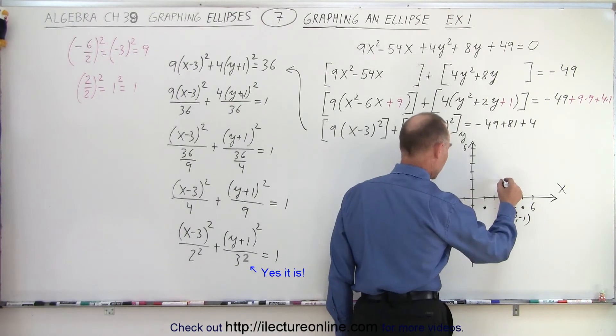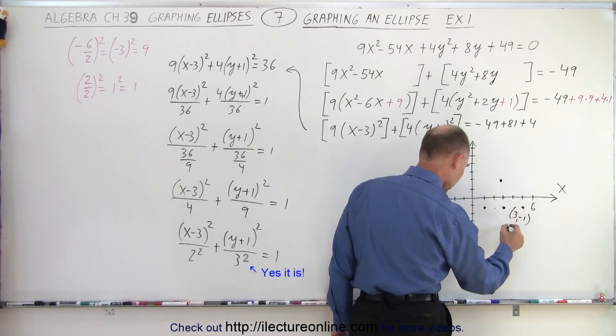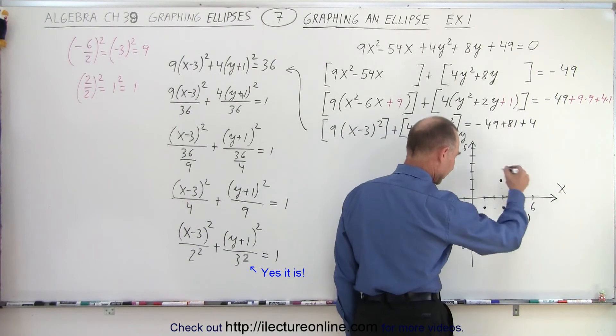And in the y direction, we're going to move up and down three units. So 1, 2, 3 and 1, 2, 3. And so now we're going to connect those outside dots.